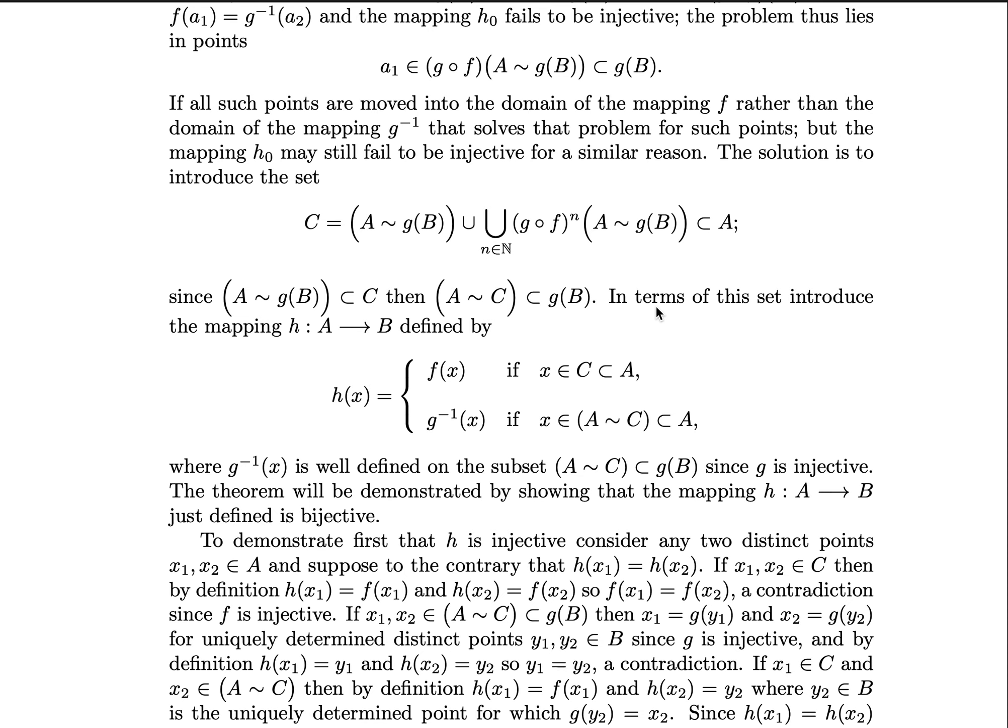namely that you let the mapping h from A to B be defined by h(x) equal to f(x). Actually it's probably better to start the other way, that h(x) equals the g inverse of x for every x in A except for C, which is a subset of A.